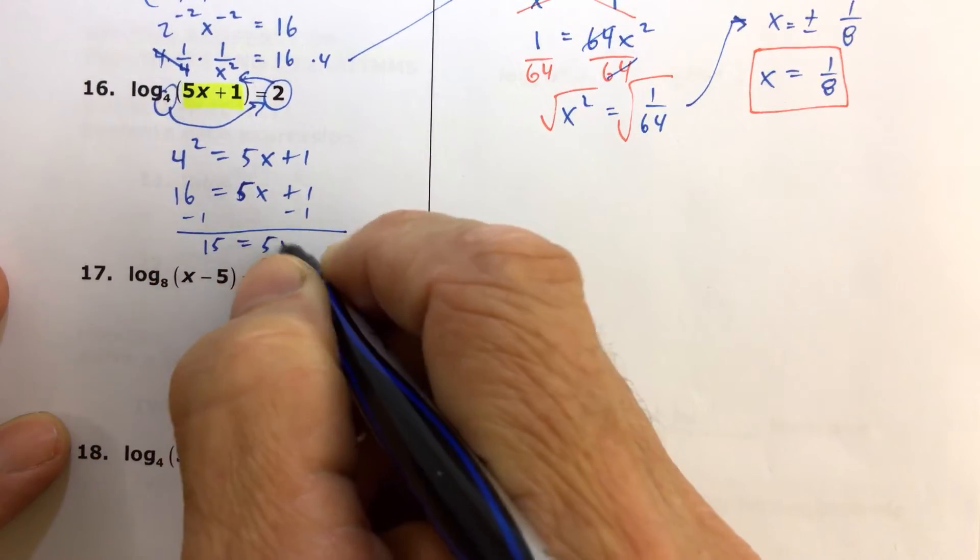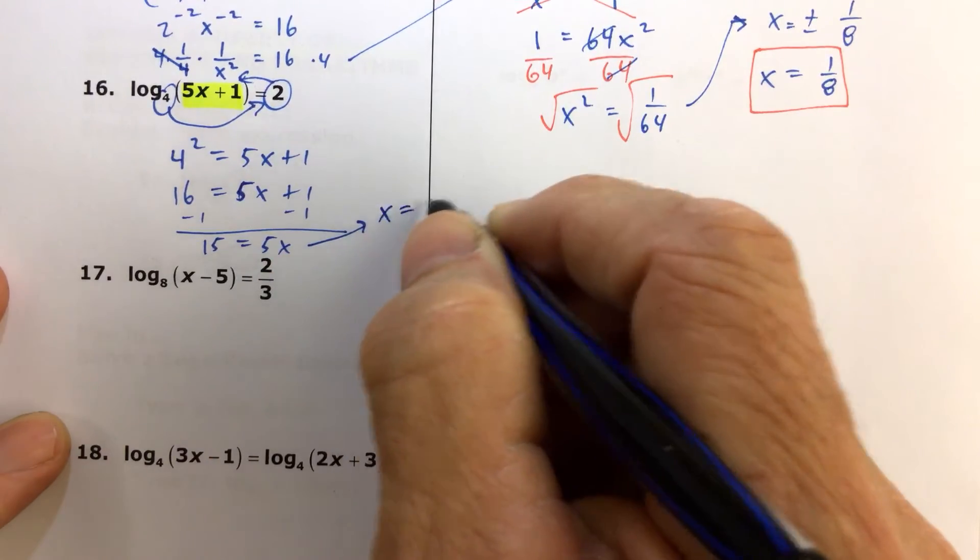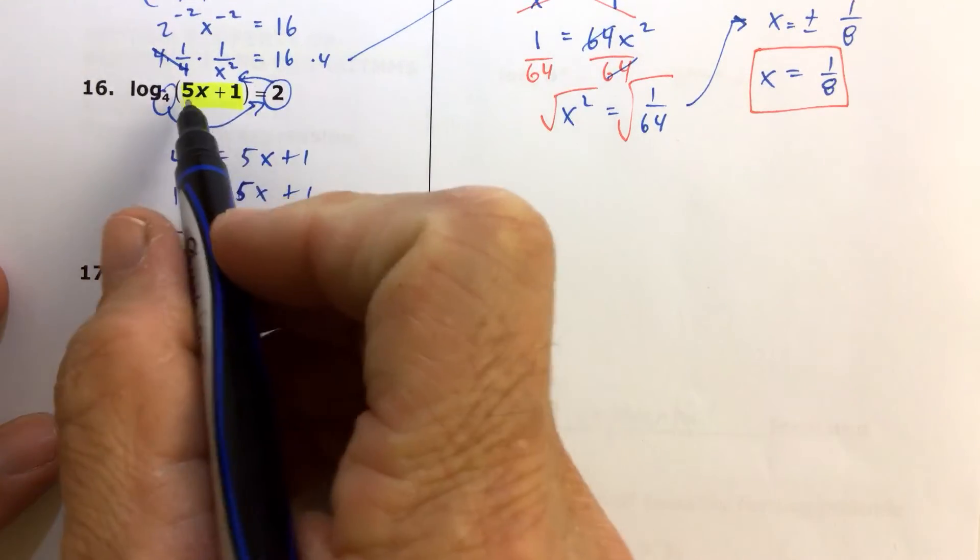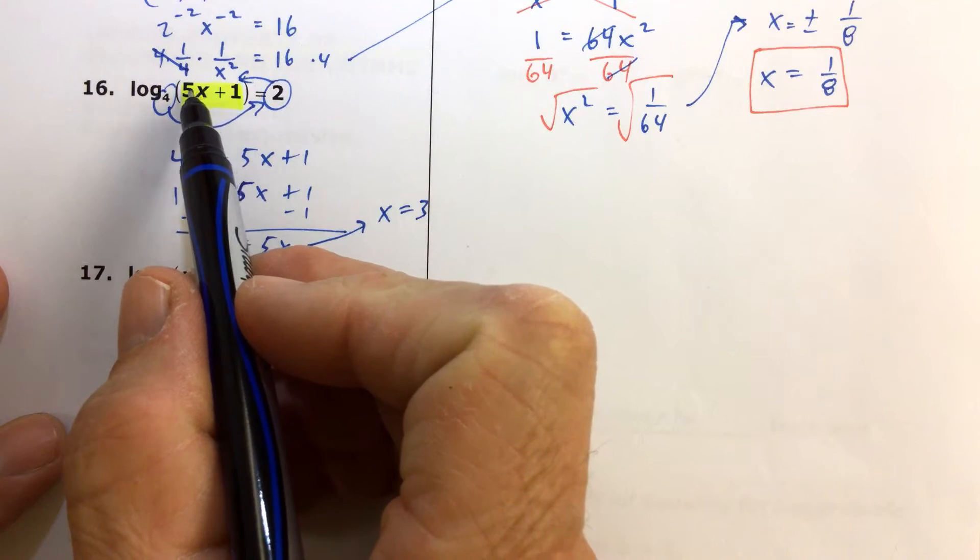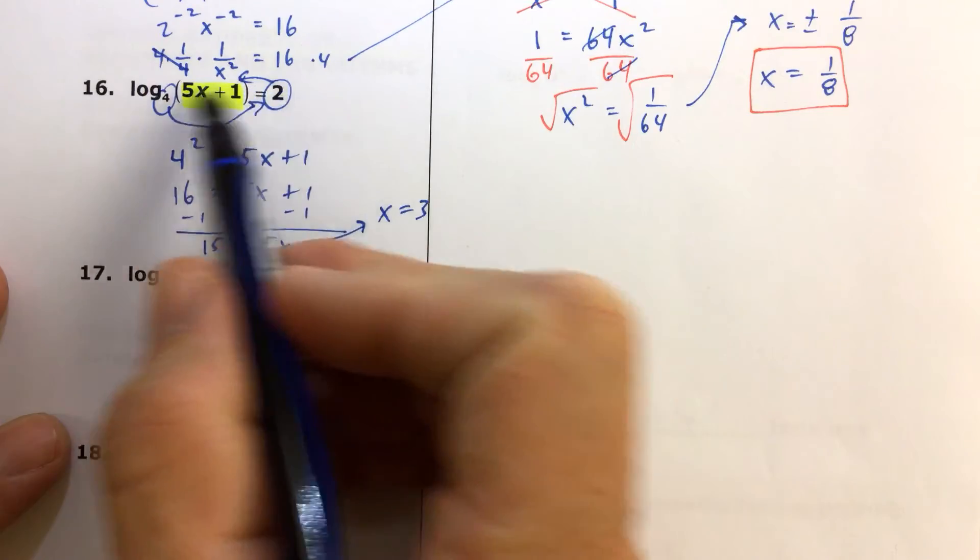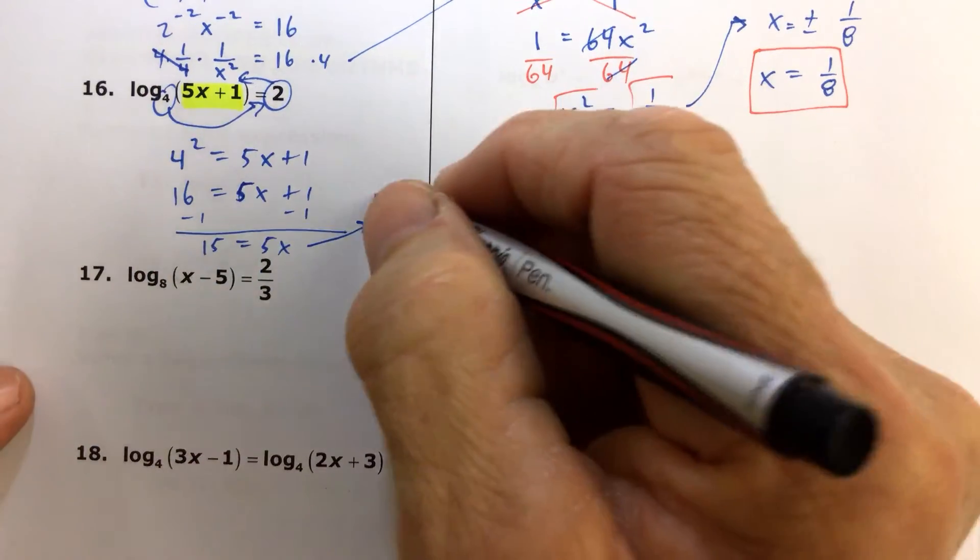we get 15 equals 5x, which means that 5 times 3, so x is equal to 3, is the solution to this equation. Let's just make sure it works. 5 times 3 is 15, 15 plus 1 is 16. 4 squared is 16, so that does check out. So x is equal to 3.